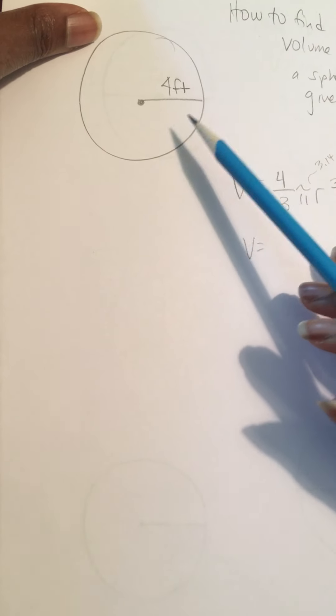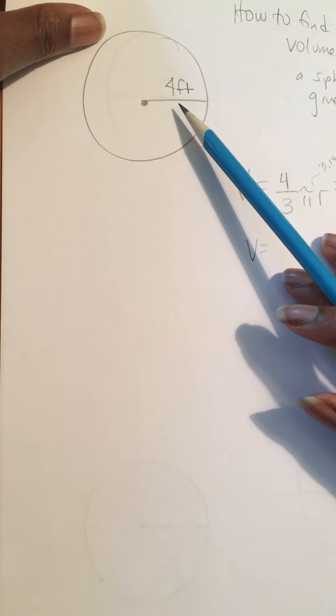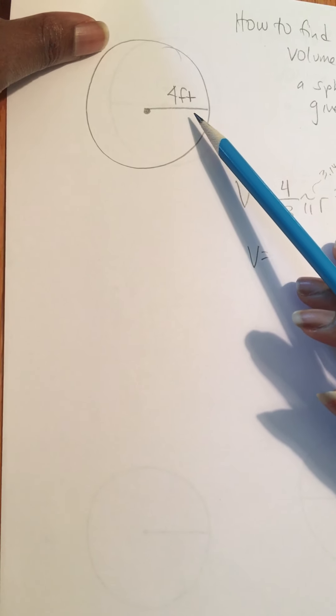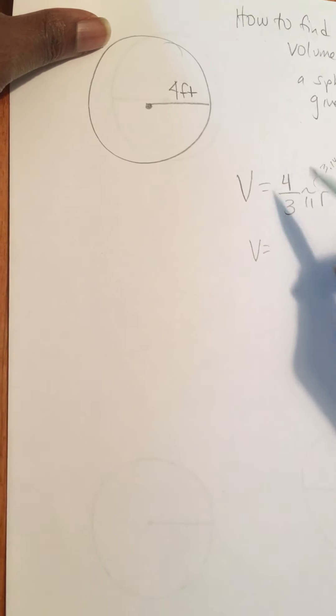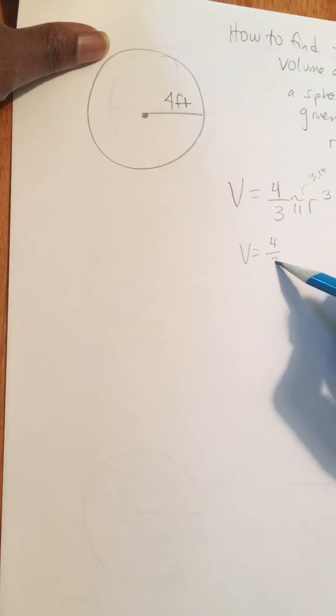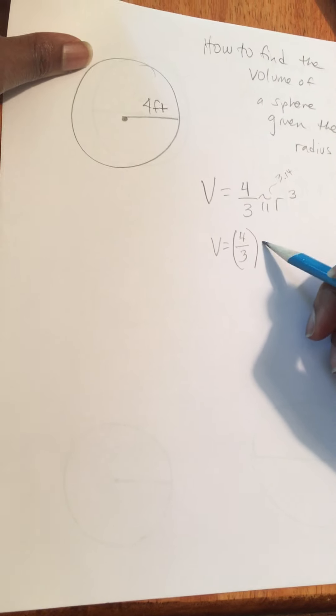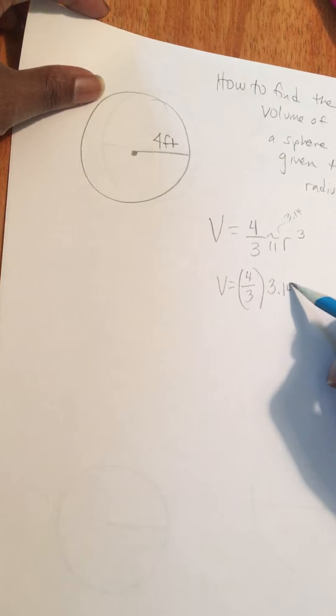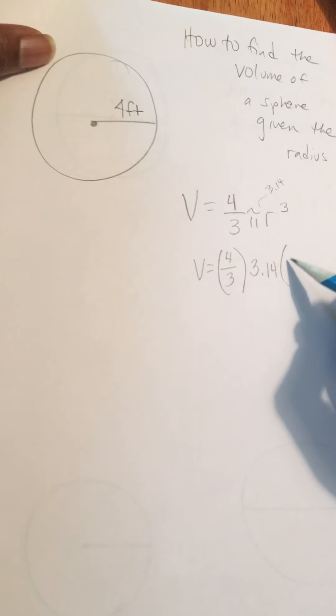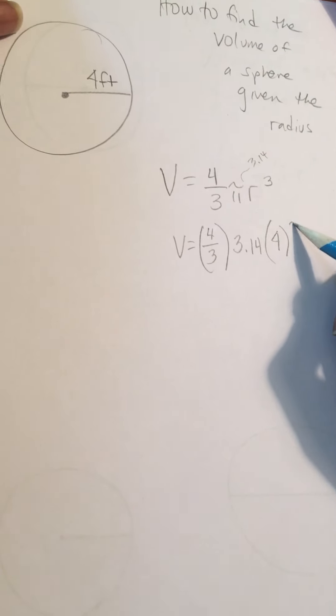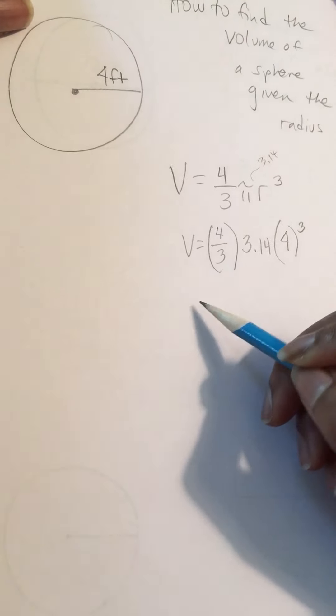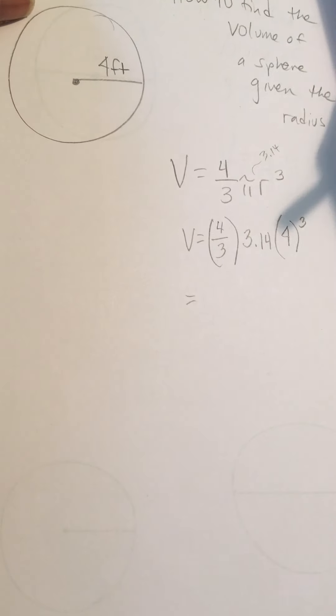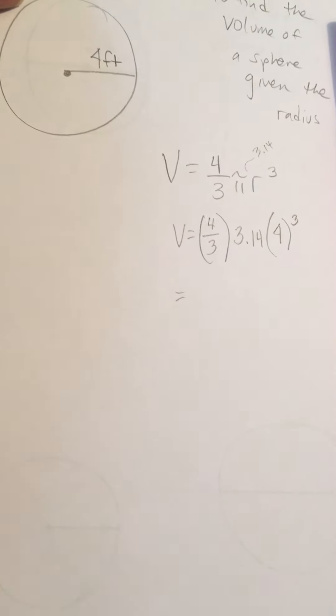I'm going to start this problem. My sphere has a radius of 4 feet, and so what I'm going to do is volume is equal to 4 thirds times 3.14, and then the radius cubed is going to be 4 to the third power.